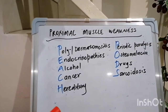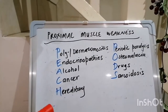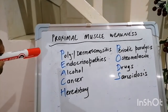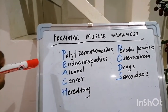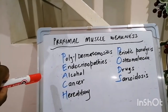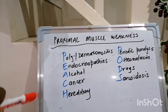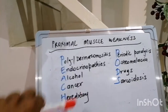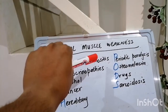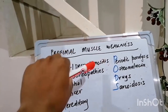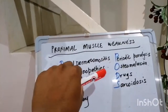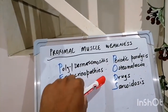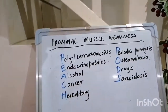So guys, quickfire again — causes of proximal muscle weakness: PEACH PODS — polymyositis/dermatomyositis and rheumatological conditions, endocrinopathy, alcohol, cancer, hereditary issues like Becker's and Duchenne's, periodic paralysis especially hypokalemic or thyrotoxic, osteomalacia, drugs which are statins and steroids, and sarcoidosis.